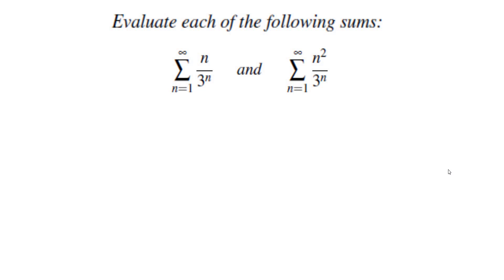We're going to start with the sum of x to the power of n, n equals 0 to infinity. This is a geometric sum and we know the answer is 1 over 1 minus x, as long as x is between negative 1 and 1.